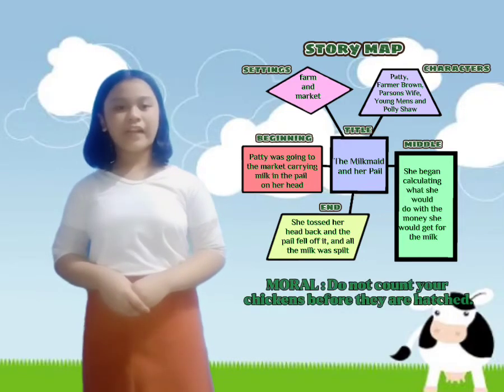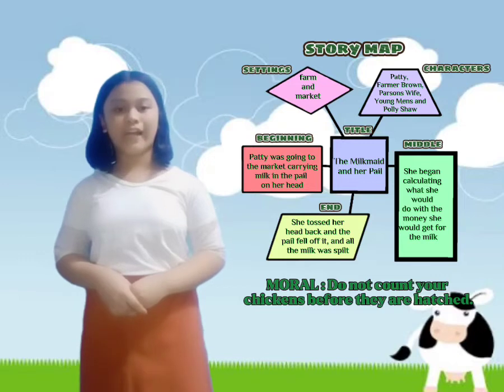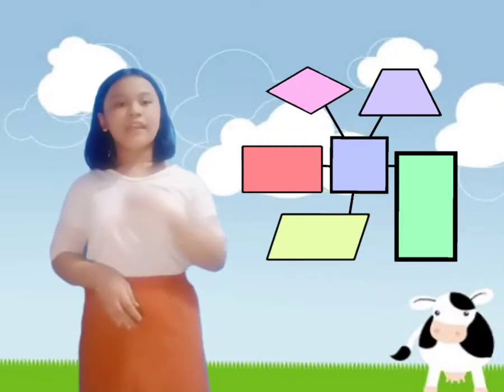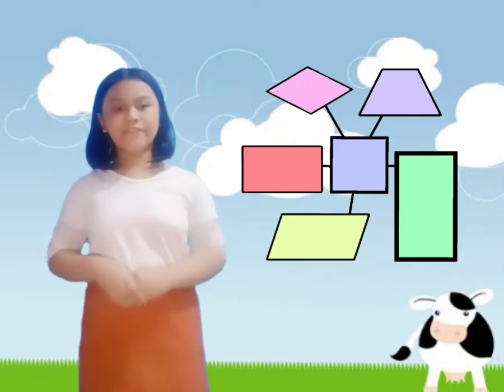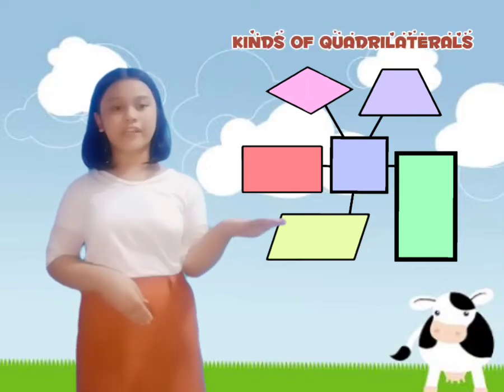The moral of the story is: do not count your chickens before they are hatched. Now, let's identify and describe the different kinds of quadrilaterals.